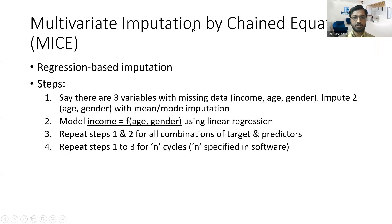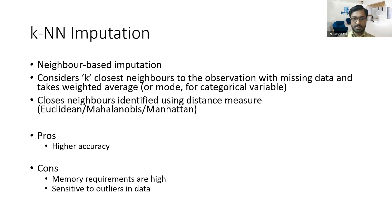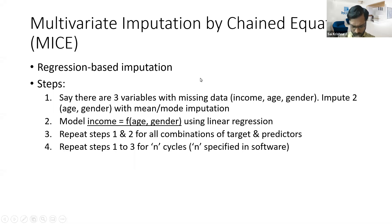The last technique is called multivariate imputation by chained equations, or MICE for short. This is also a regression-based imputation technique. Similar to regression imputation, one variable is the target and the others are predictors — but the difference is that we perform multiple iterations of the regression.